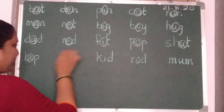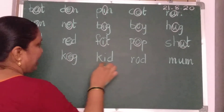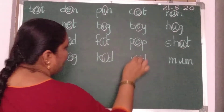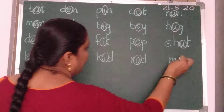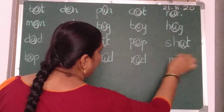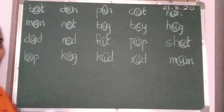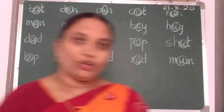K, E, G — cage. K, I, D — kid. R, O, D — rod. M, U, M — mum. So you should circle only the vowels. Here, you should circle the vowels.